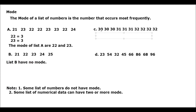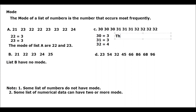For letter C, counting the data: 30 appears 3 times, 31 appears 3 times, and 32 appears 4 times. So the mode for the list of data in letter C is 32, since it occurs most frequently. That is your answer.